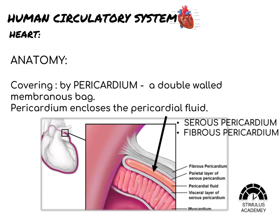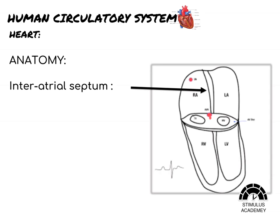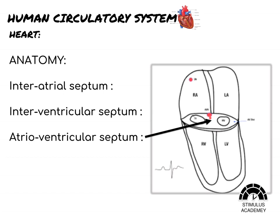The serous pericardium encloses the pericardial fluid, and the fibrous pericardium lies outermost. So pericardium is of two types: serous pericardium and the outer fibrous pericardium. Humans have a 4-chambered heart with two small atria and two relatively larger ventricles. The septum between the two atria is called the interatrial septum, between the two ventricles is called the interventricular septum, and between the atrium and ventricle is called the atrioventricular septum.